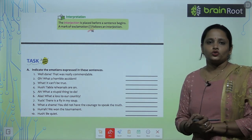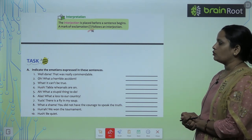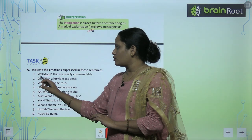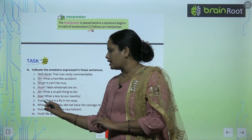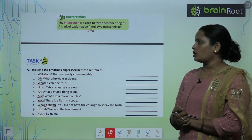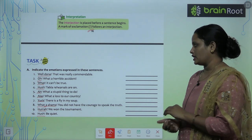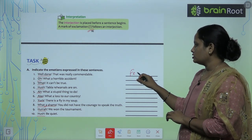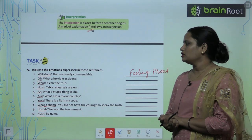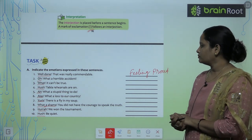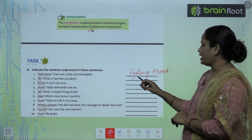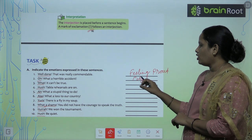Let's move on to the exercise. The first question asks you to indicate the emotions expressed in these sentences. For example, 'Well done, that was really commendable' — the feeling expressed is feeling proud. And 'Oh, what a horrible accident' — the feeling is pity or sorrow.